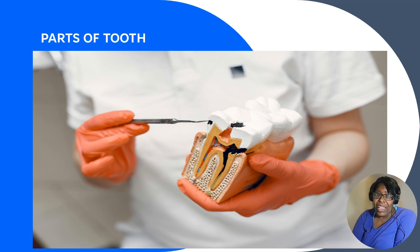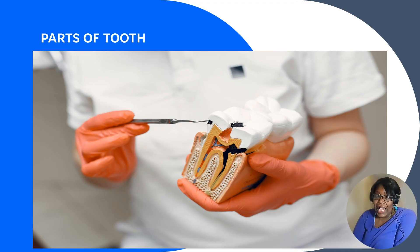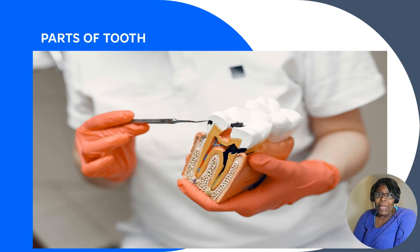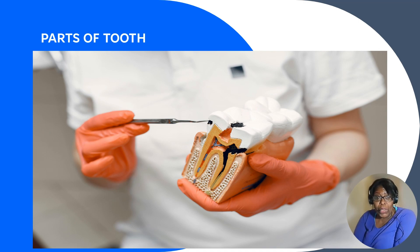Below the dentine is the pulp, which has got blood vessels and connective tissue. That is where, when decay travels, it becomes very painful and keeps you awake at night. You can see that black stuff — that is decay. Without any problems a tooth is at 100%; immediately you have decay it becomes like 80%; once it hits the nerve it drops to about 50%.